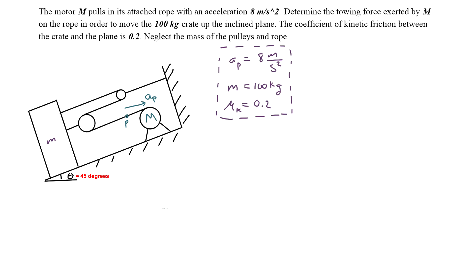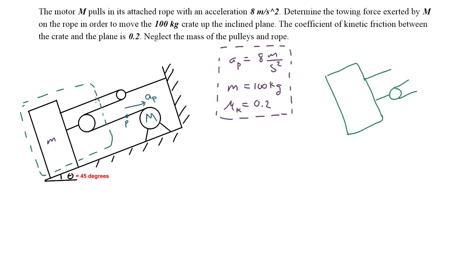The very first thing we're going to have to do is create a free body diagram of the crate and cut through these tension cables. Since the tension travels through the cable, the tension values for each part of the cable are going to be the same. Therefore the tension at each segment is going to be T.